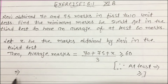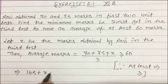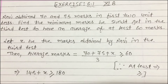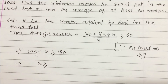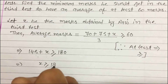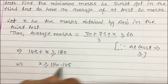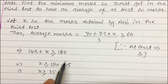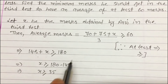Solving the inequality, you will get 145 + x ≥ 180. So x ≥ 180 − 145, and x ≥ 35. So Rabbi must obtain a minimum of 35 marks.